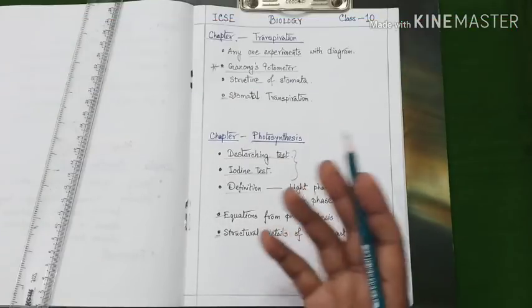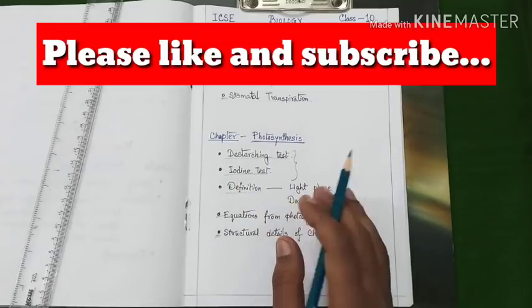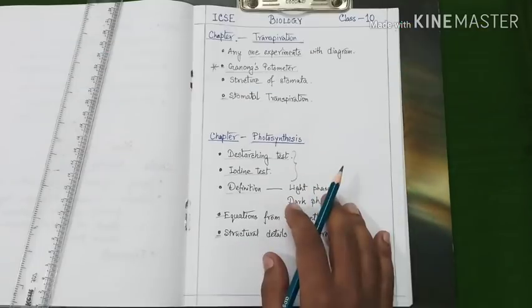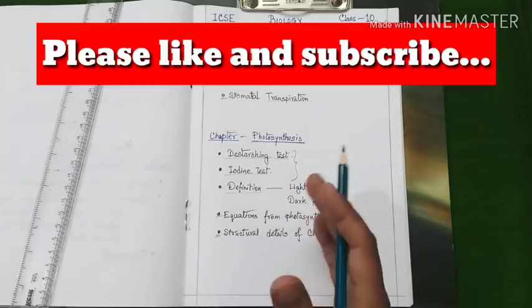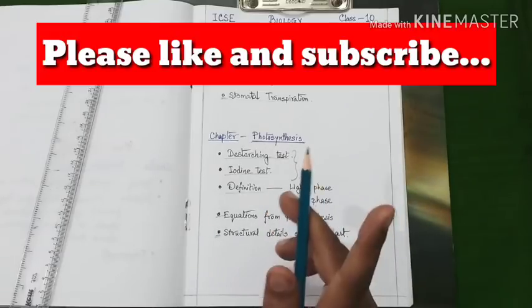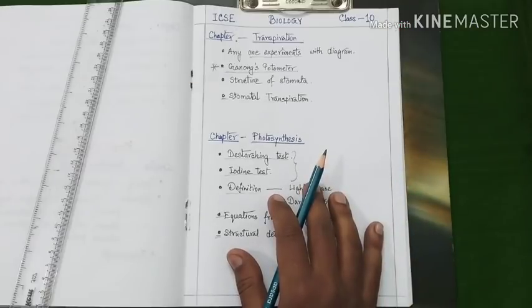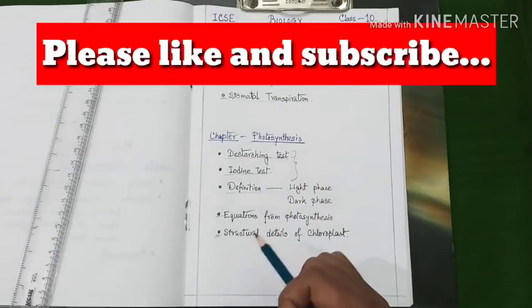So we have learned about all the important topics from basic biology and plant physiology. From questions point of view, all these topics are very important. You can't make any suggestion out of these topics. You should study the entire syllabus with special emphasis on these topics to get full marks in the board exam. That's all for today. We will meet again with the next units on our next video. Till then, goodbye.